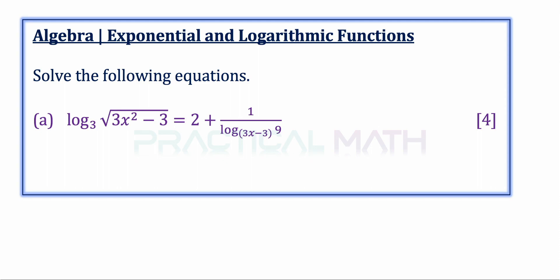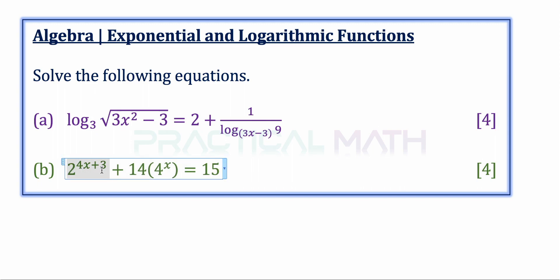In a separate part B question, you have the exponential equation 2 to the power of 4x plus 3, plus 14 multiplied by 4 to the power of x, equals 15. You might want to pause this video to give this a try, and when you're ready, keep watching.